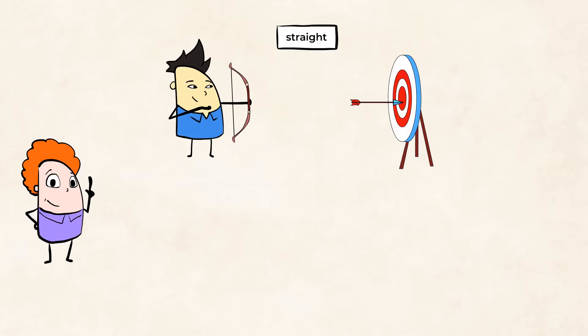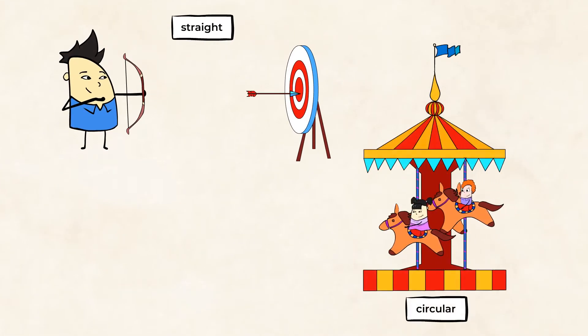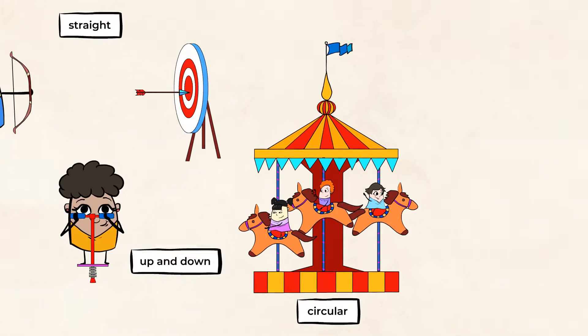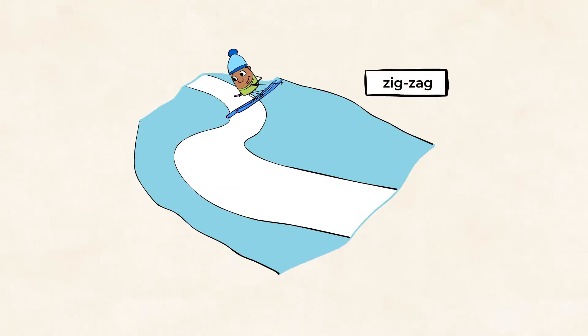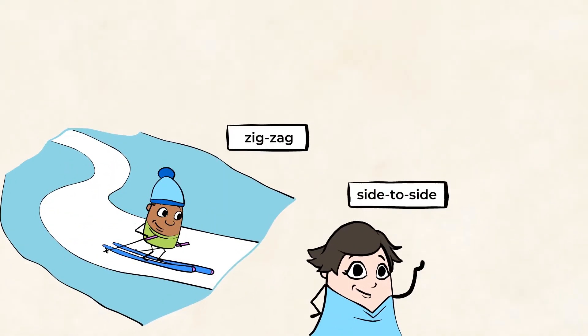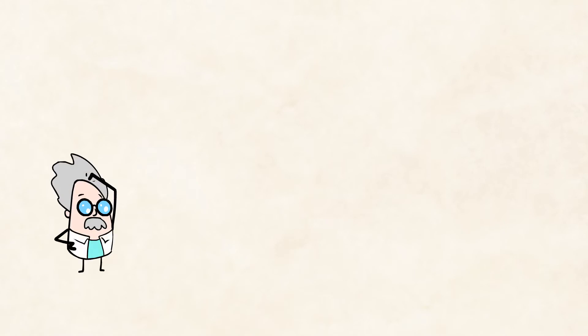It can be circular, like when you ride on a merry-go-round. Motion can be up and down, like when you jump on a pogo stick. Or it can be zigzag, like when you're skiing. Motion can also be side to side, like when you dance. Some motion is even a combination, like a swing.